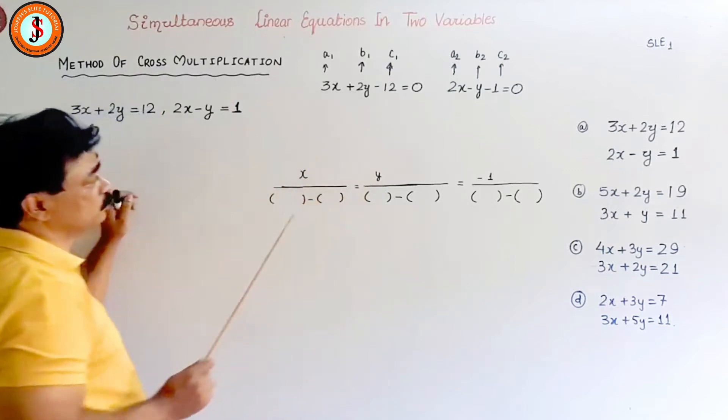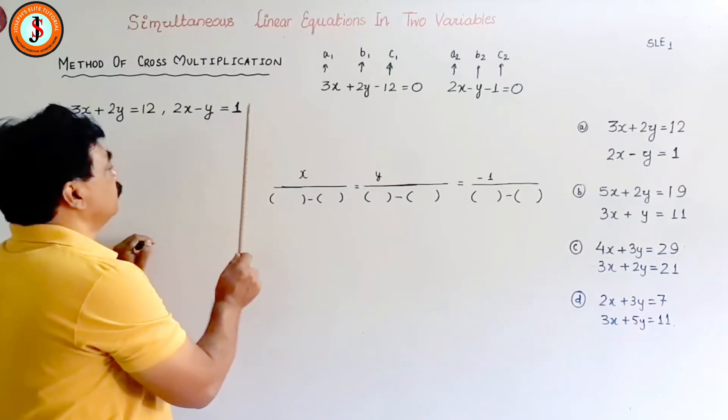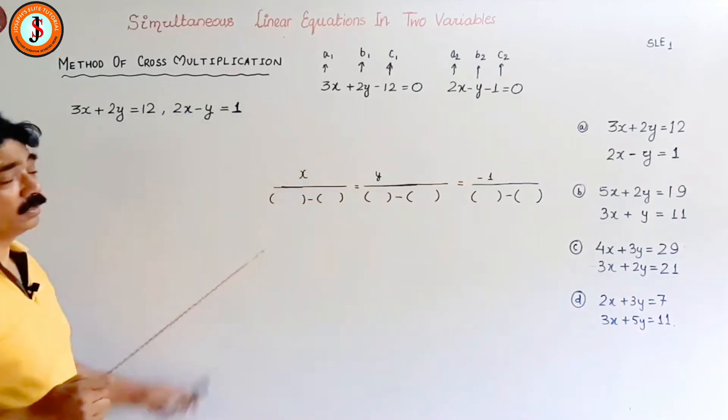Similarly, you have to bring this one. It is after equal to, so you bring this side, so 2x minus y minus 1 is equal to 0.